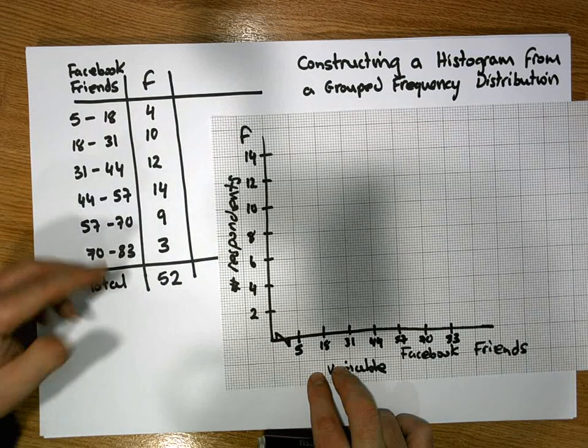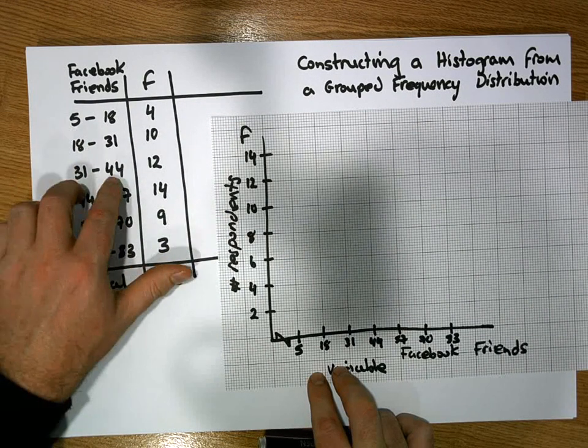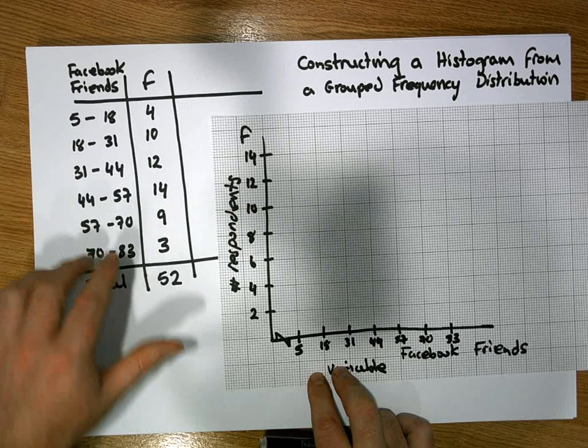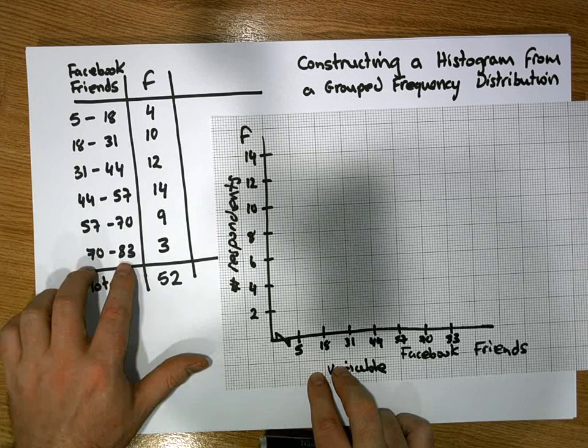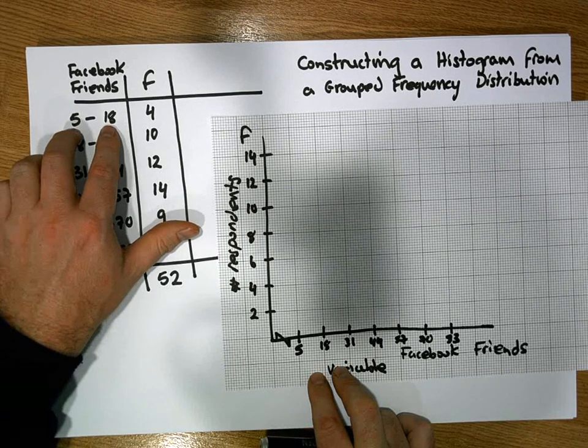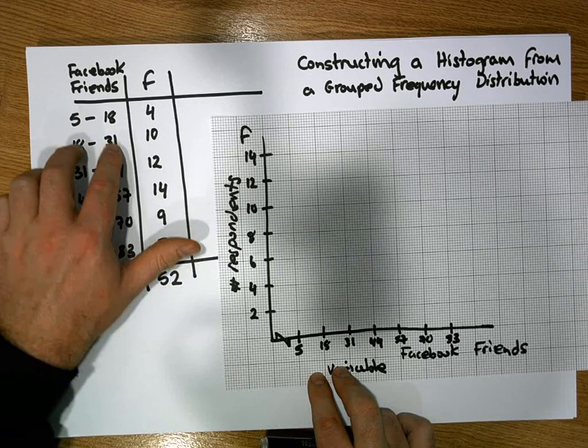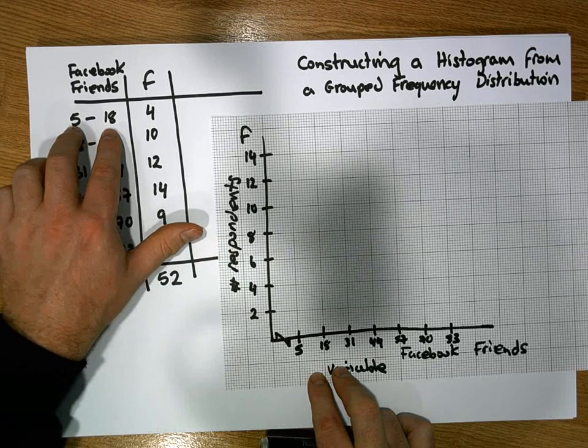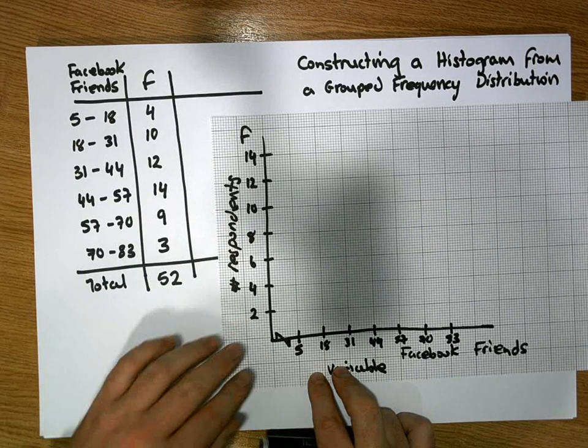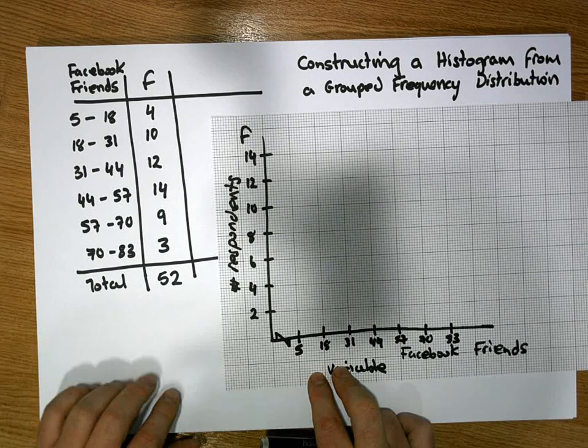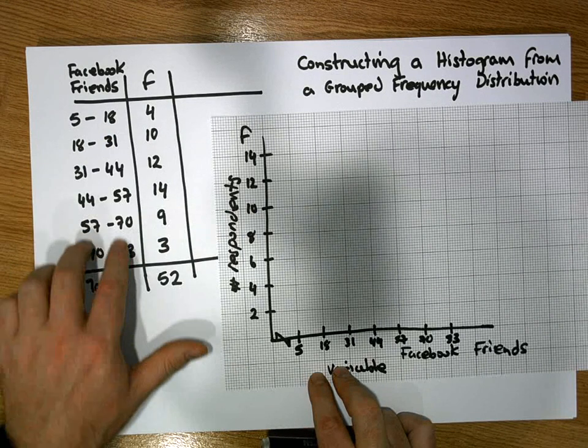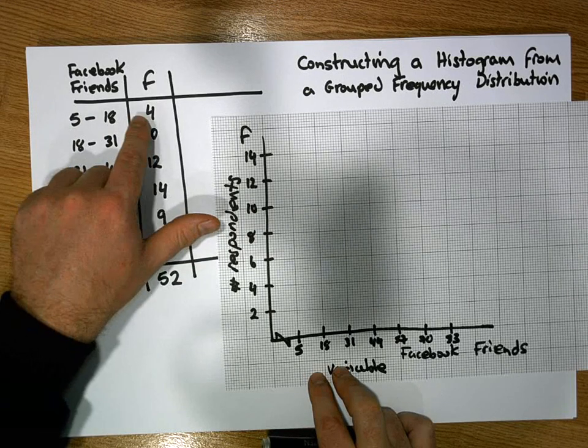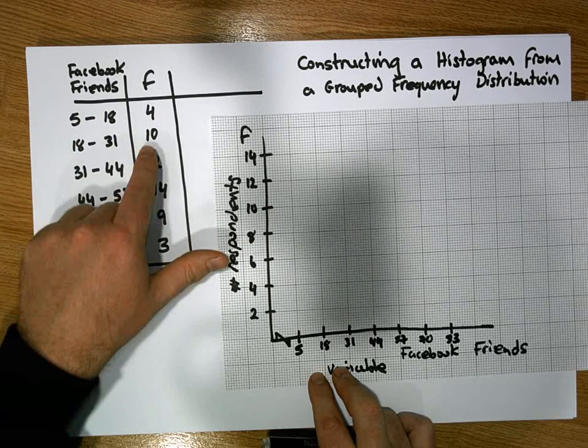Now in our particular instance here, each of our classes has the same class width. It's a width of 13. They don't necessarily have to have the same class width, but what is important is that our unit of measure, let's say our class width times how many times the class width is within the interval, times our frequency, represents the area of the bar. But let's not complicate it. And let's just consider this particular scenario. Every class has the same width.